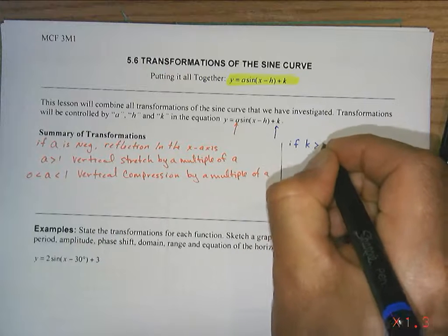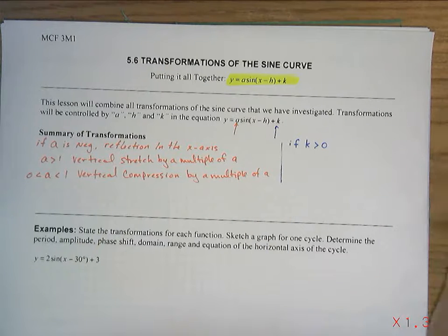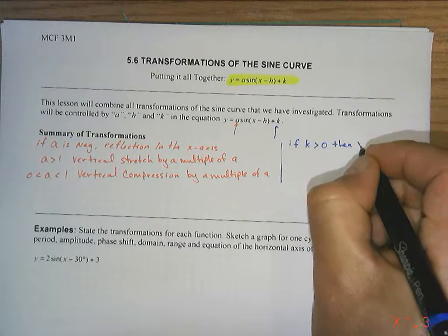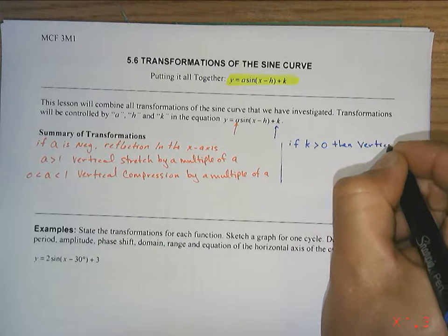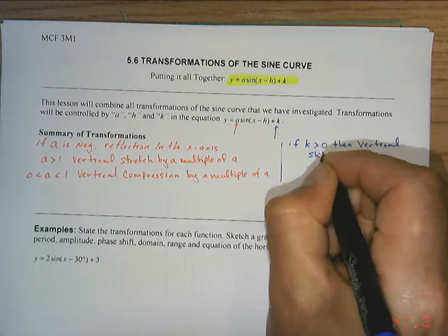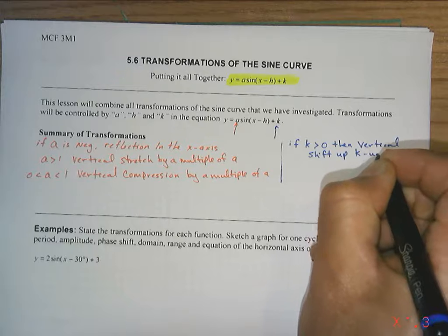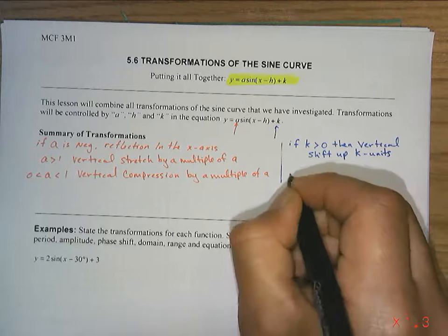So if K is positive, greater than zero means positive, then we have a vertical shift up K units.